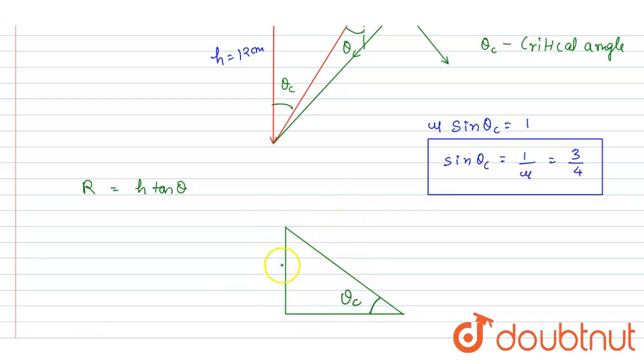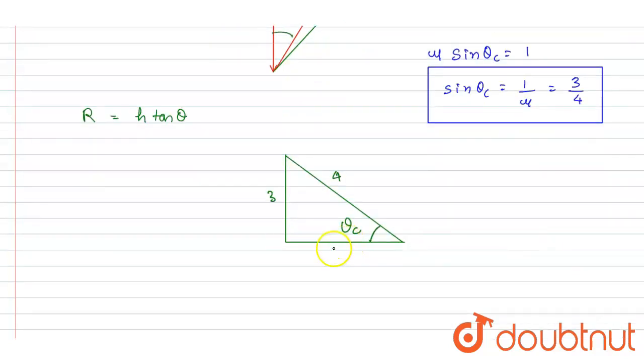If I say this is 3, this is 4, you can write down this will be under root of 4 square minus 3 square, so it will be under root of 16 minus 9.